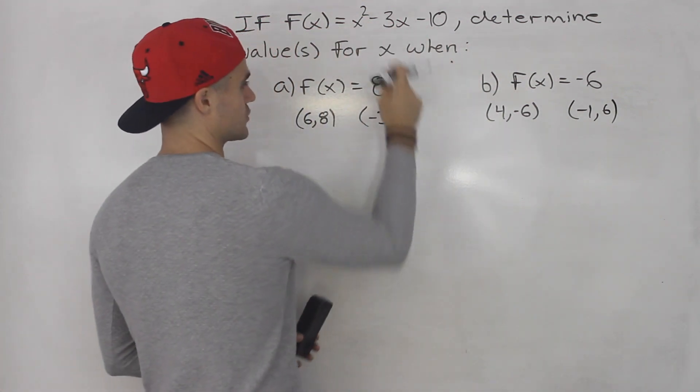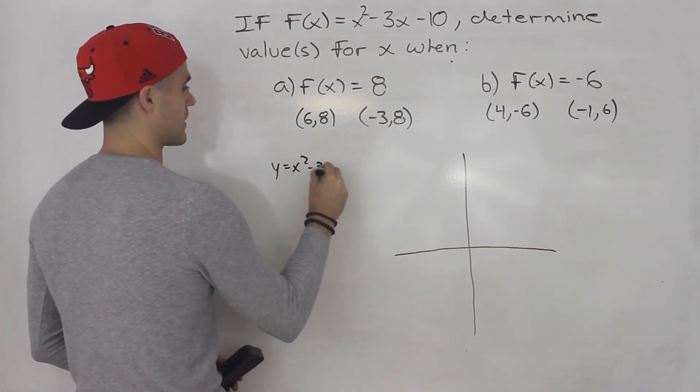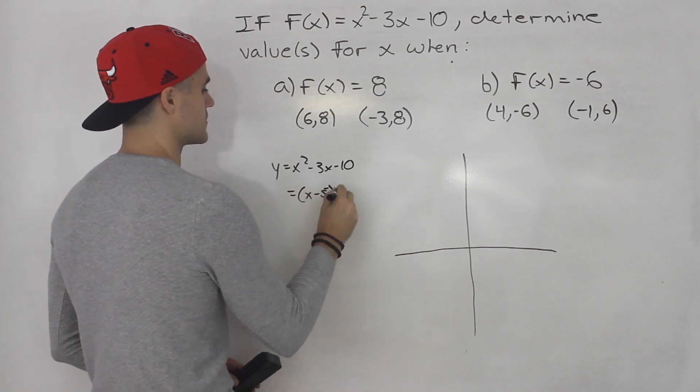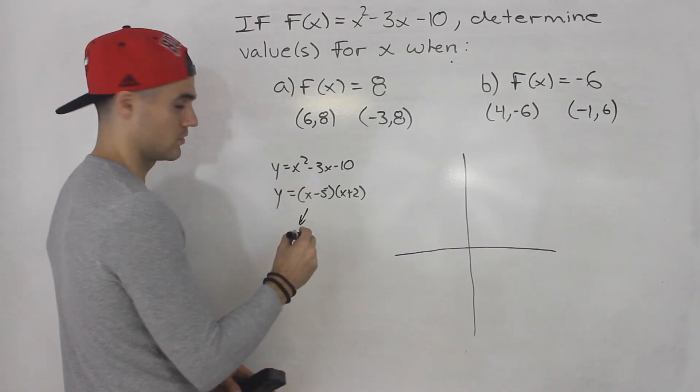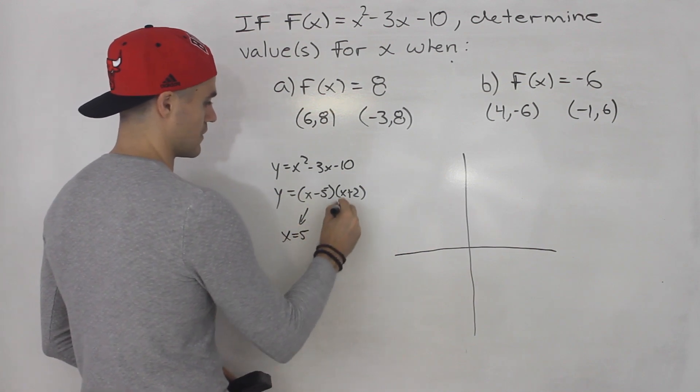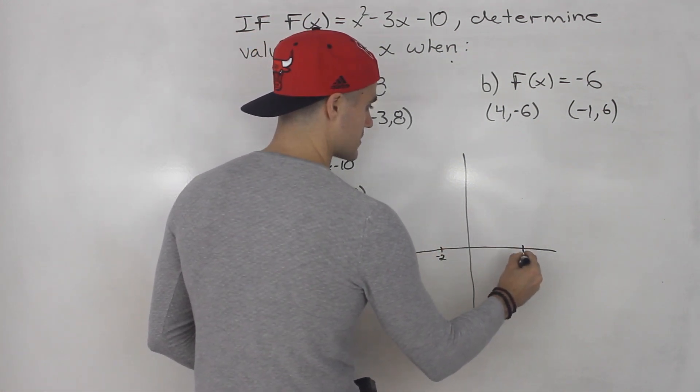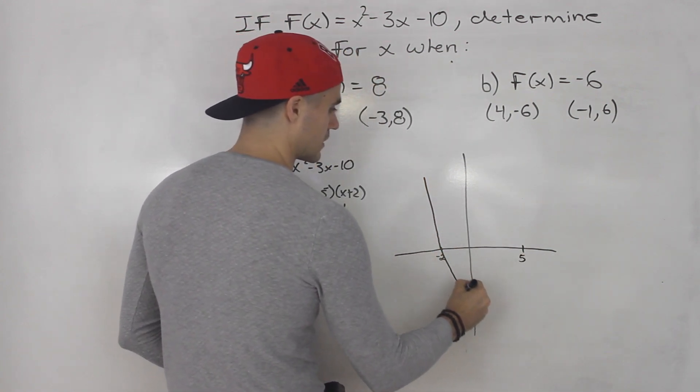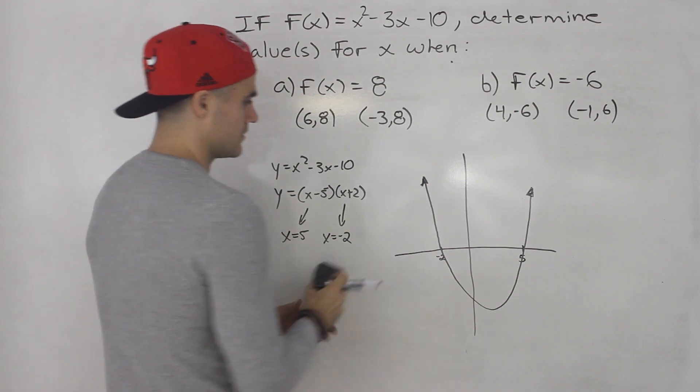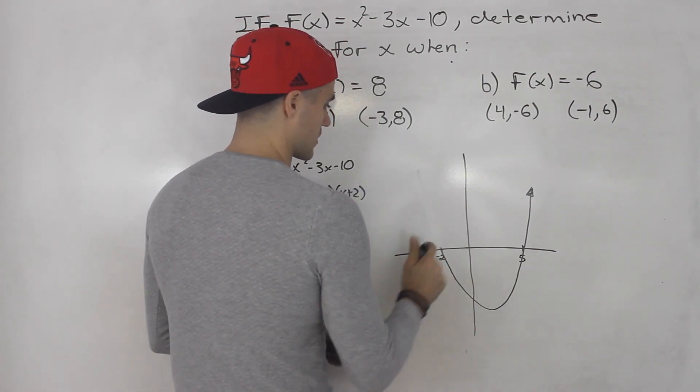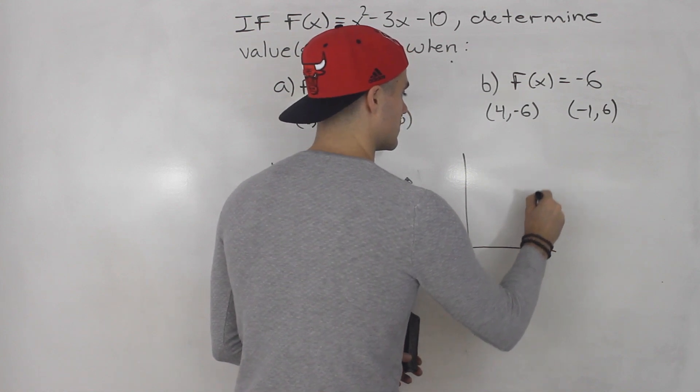So if you actually take this function and graph it, we got y equals x² - 3x - 10. This actually factors into (x - 5)(x + 2). So it's easy to find the x intercepts when y is 0. x - 5 would be 0 so that gives us an x-intercept of 5. This would be an x-intercept of -2. So we got -2 over here and positive 5 over here. So this is a quadratic that's going to look something like that. Actually let's make this quadratic go a little bit further out.